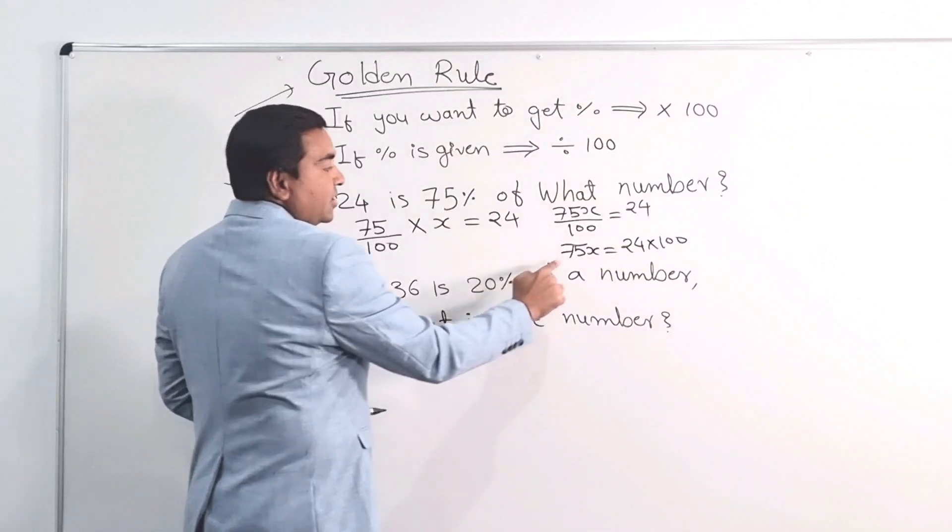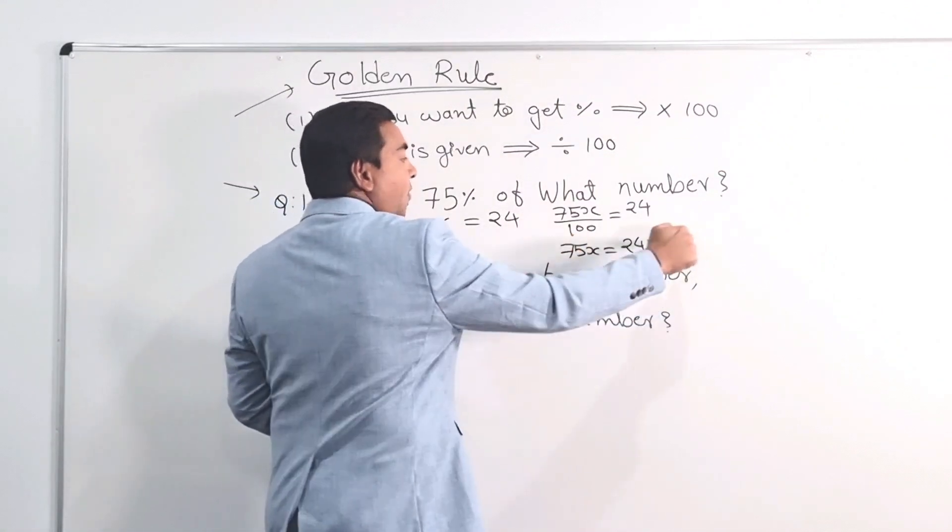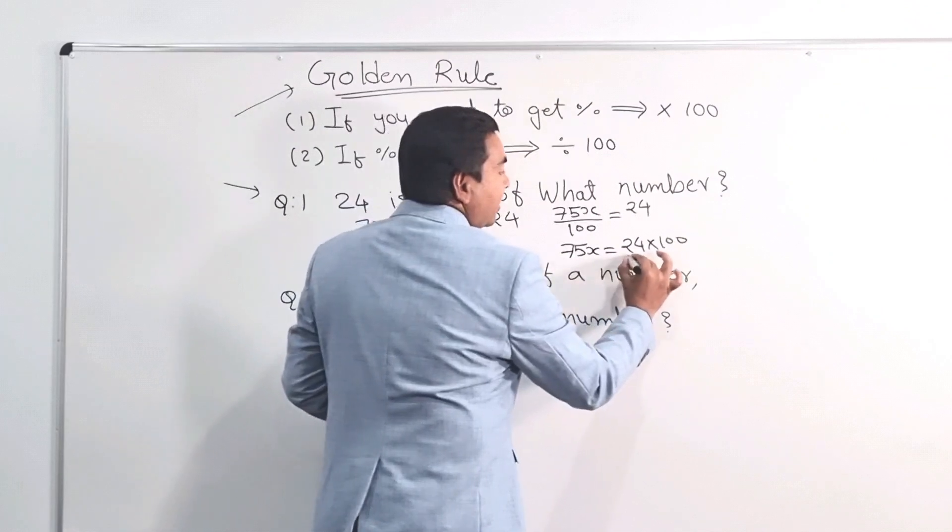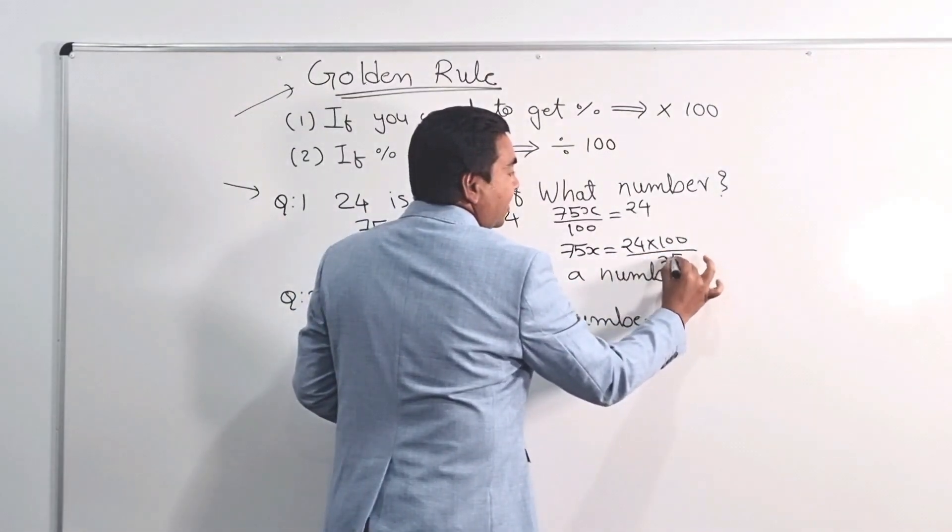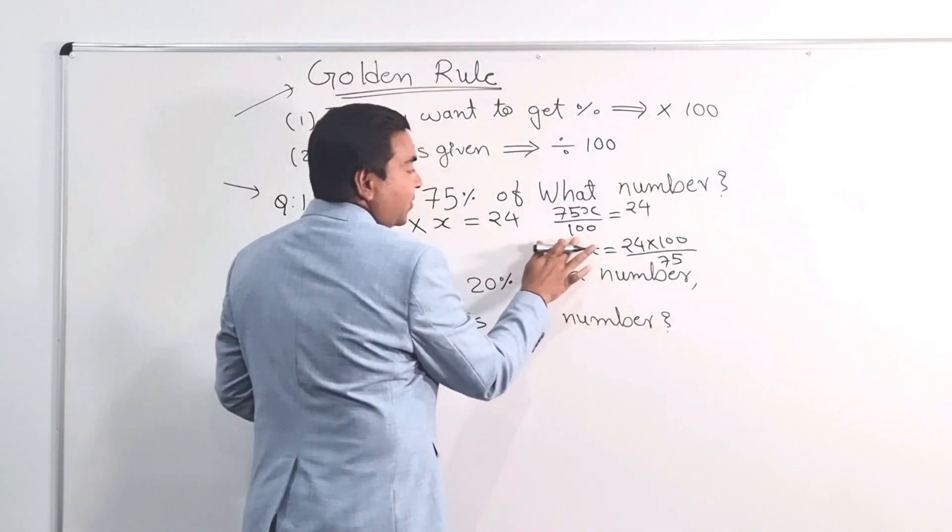And now, this 75 is in times with X. So times goes divided by. So I can divide by 75 here. And I can take this off from there. So I can save some space.